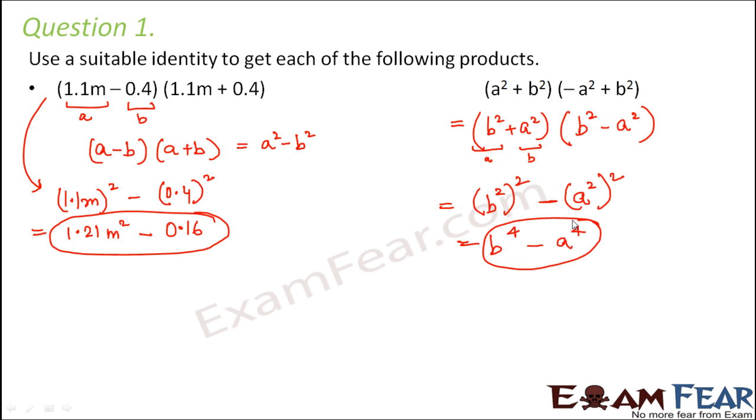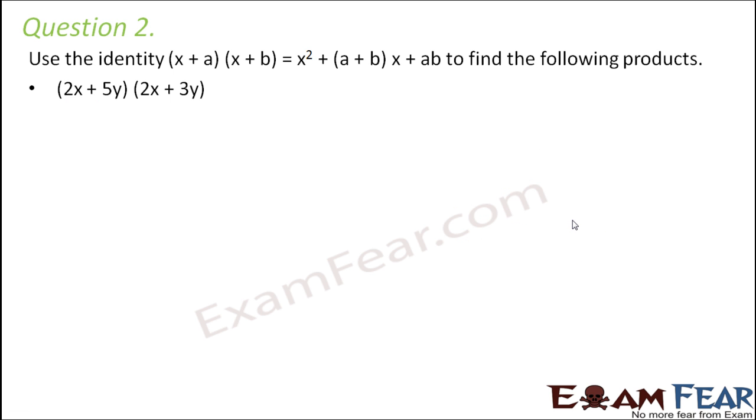Question number 2: Use the identity (x + a)(x + b) = x² + (a + b)x + ab to find the following products. Now you might be wondering, what is this identity? This is not a part of the standard identity. Let me first talk about this identity.